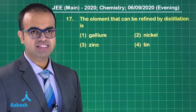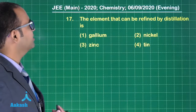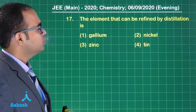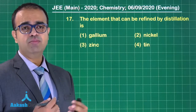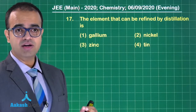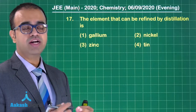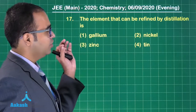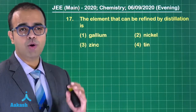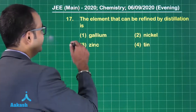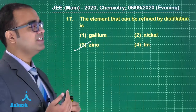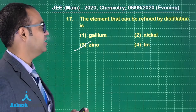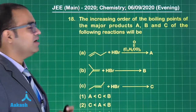Question 17: the element that can be refined by distillation. To refine an element by distillation, it should have a lower boiling point. Out of all these elements, zinc has a low boiling point — zinc is often purified by distillation. The answer is option 3.